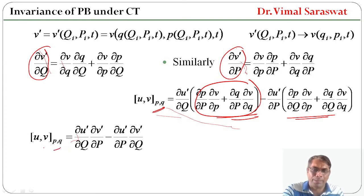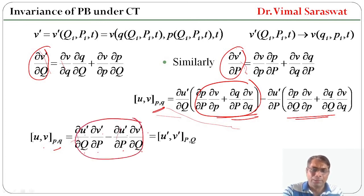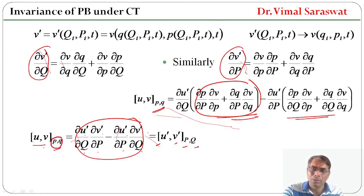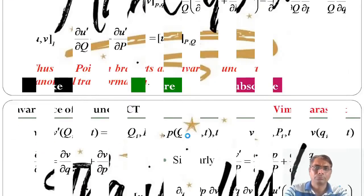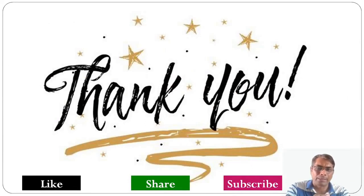The Poisson bracket of u and v with respect to small p and small q is equal to the Poisson bracket of u_dash and v_dash with respect to capital P and capital Q. So the Poisson bracket of u and v with respect to small p, small q equals the Poisson bracket of u_dash and v_dash with respect to capital P and capital Q. It means the Poisson brackets are invariant under a canonical transformation. Here we end our session. In today's session of Classical Mechanics, we have discussed that the Poisson bracket under canonical transformation is invariant. Goodbye.